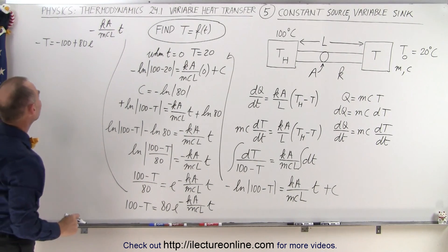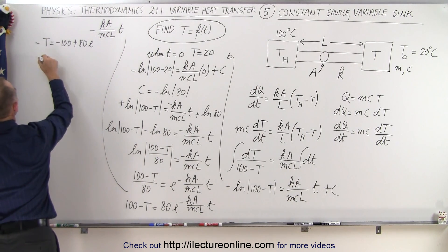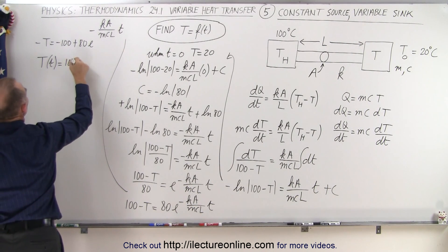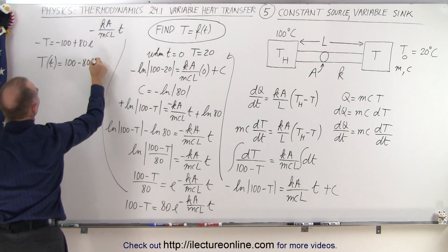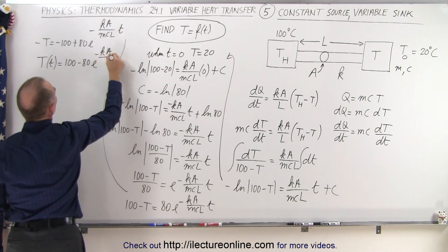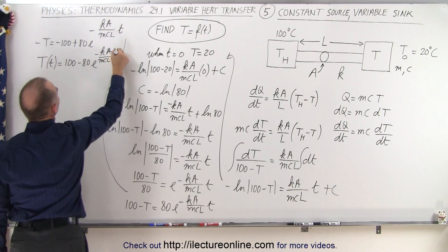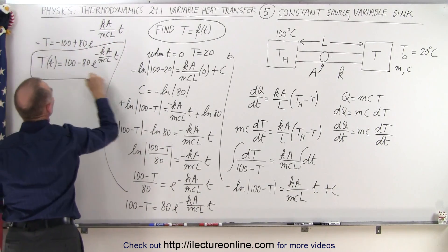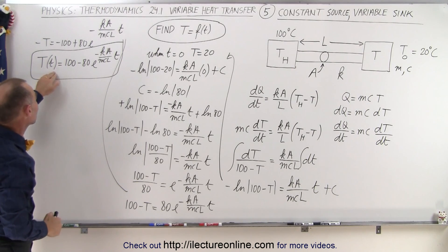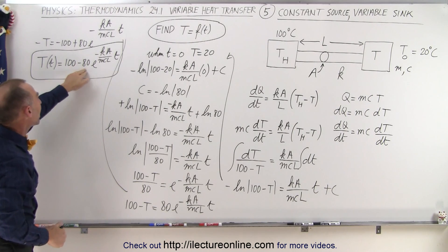Now again, I'm going to multiply everything by negative 1, which means that T as a function of time is going to be 100 minus 80 times E to the minus KA over MCL times T. And this is the equation I was looking for, the equation that tells me the temperature as a function of time as being 100 minus 80 times E to the minus KA over MCL times T.